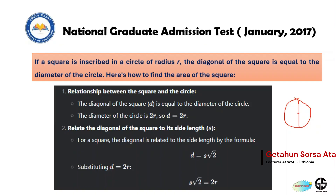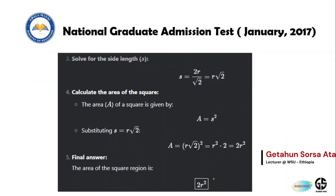Substituting d = 2r into the formula: s√2 = 2r. Solving for s: s = 2r/√2 = r√2. The area of the square is s², and substituting s = r√2 gives area = (r√2)².